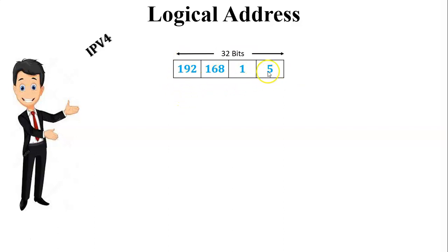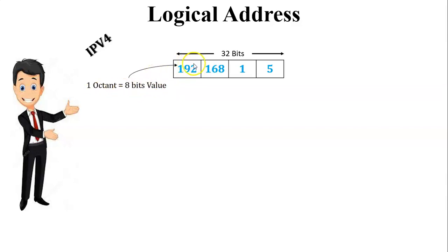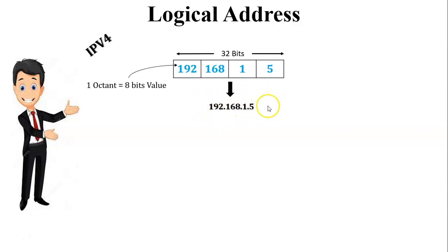IPv4 is 32 bits. When you convert this decimal value into binary, each section stores an 8-bit value. This one box is called an octet. One octet is equal to 8 bits, and there are four octets, so 8 × 4 gives 32 bits for IPv4. The IPv4 address is written as 192.168.1.5, which is a dotted decimal number.